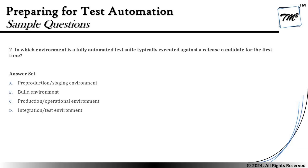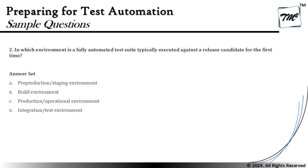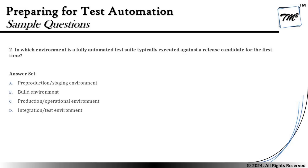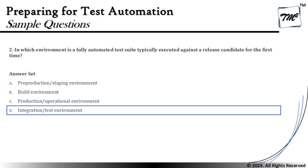Production is typically for final checks regarding operational environment compatibility or coexistence issues with other applications, which we keep as limited as possible. Post-release maintenance can be done in production, but that is not the first time we run a fully automated test. We are left with option D — integration or test environment — which is indeed the environment where you can run a full-fledged automated test for the first time. So the right answer is D.